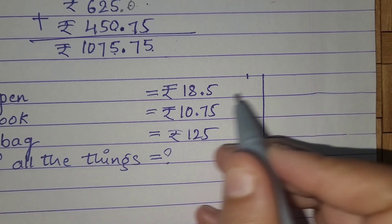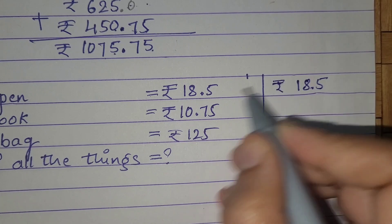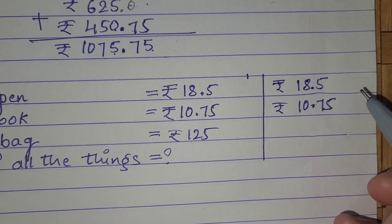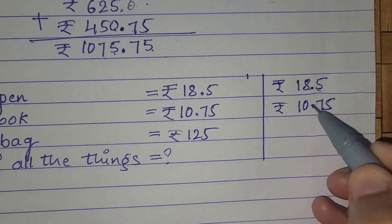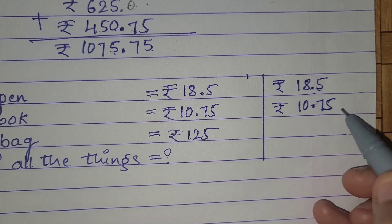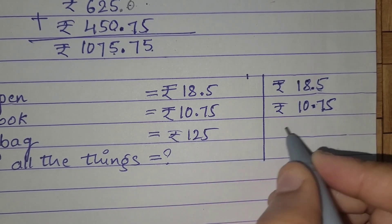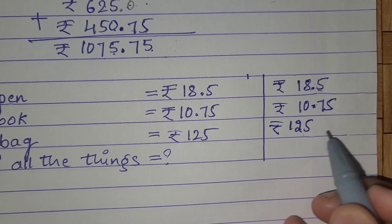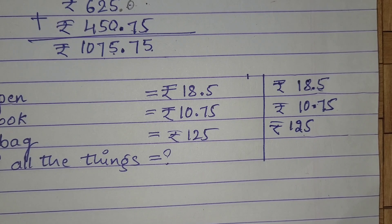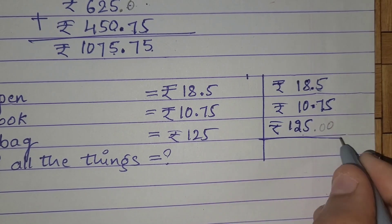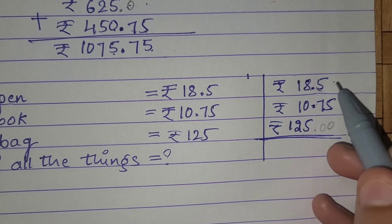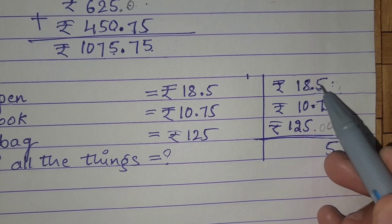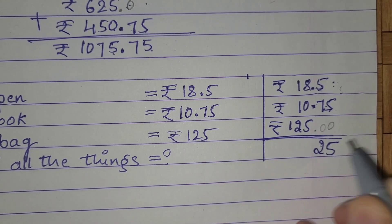So here I'll do a rough work. First let's write 18 rupees 5 paise. The second one is 10 rupees 75 paise. Just see where I'm writing the decimal point — as I told you in the previous class, the decimal point should be one below the other. Next is 125. In 125 we don't have any paise, only rupees, so in this case we have to consider it as 0. Now let's add all this, starting from the right side. 0 plus 5 is 5. 5 plus 0 is 5. 5 plus 7 is 12 — so write 2 here and carry 1 over.